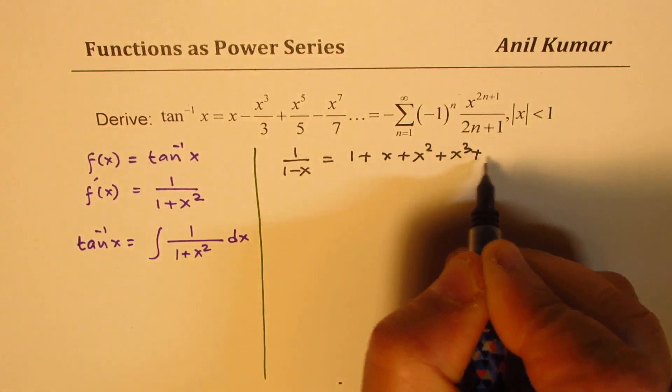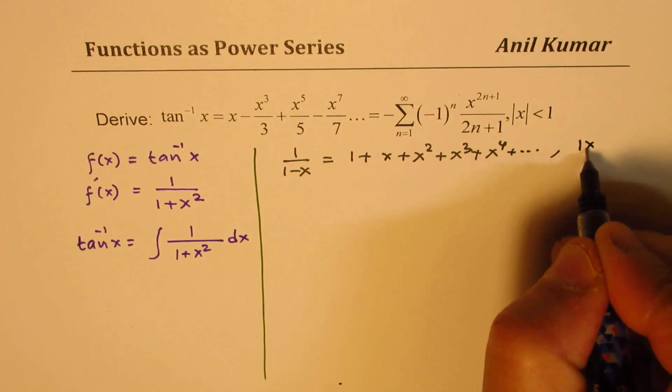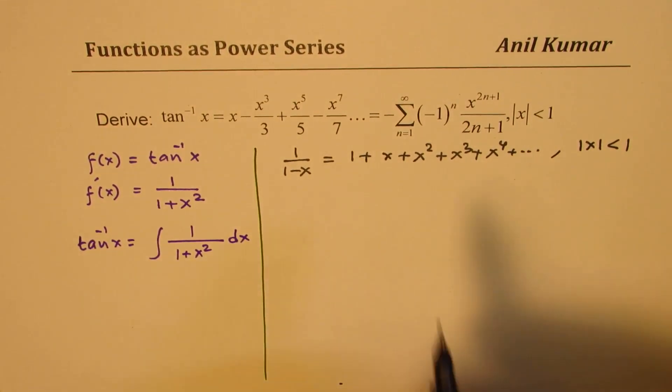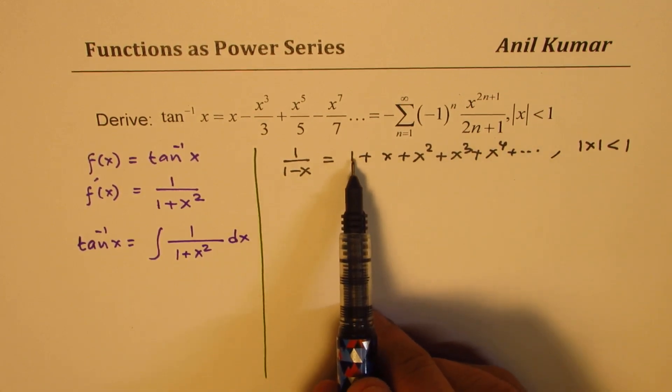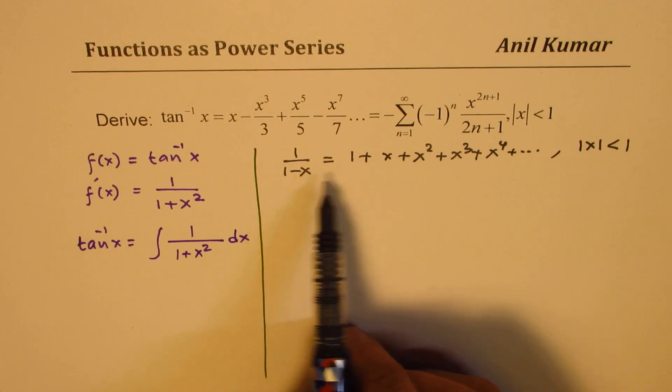This is a geometric series where a is one, you're multiplying by x so r is x, and infinite series. So sum of that series is one over one minus x.